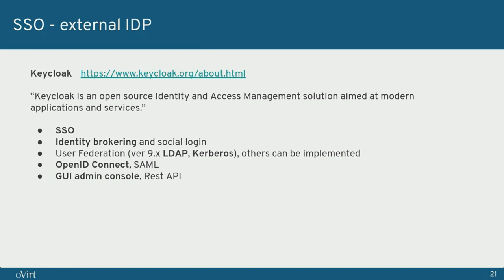Keycloak is open source and provides single sign-on capabilities, identity brokering, and social login — so accounts from providers like Google or Facebook can be reused. It supports user federation with LDAP and Kerberos, custom database backends can be added if needed, and it's based on OpenID Connect and SAML. It provides a nice admin console UI, or if preferred, a REST API that covers the configuration.